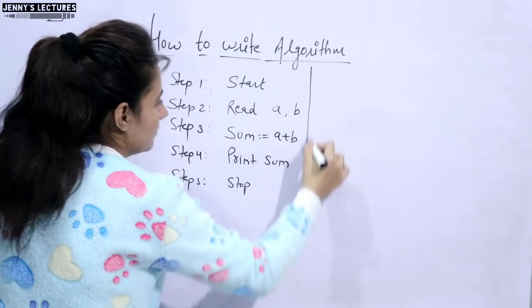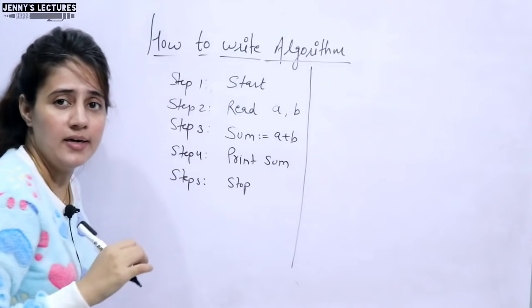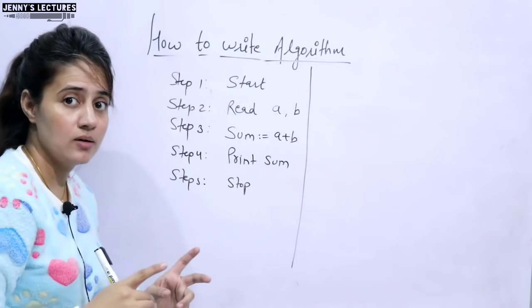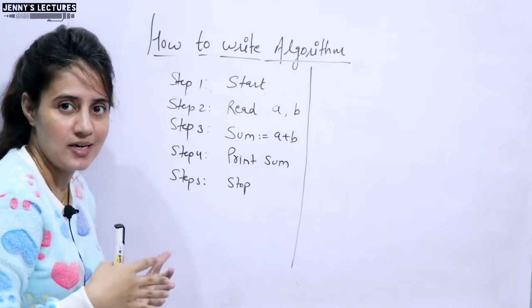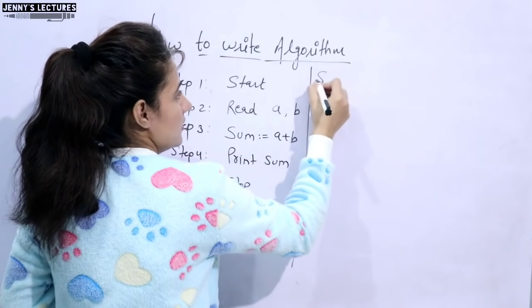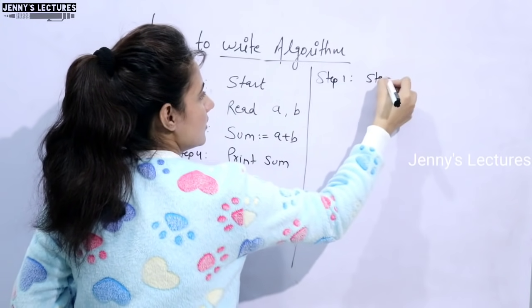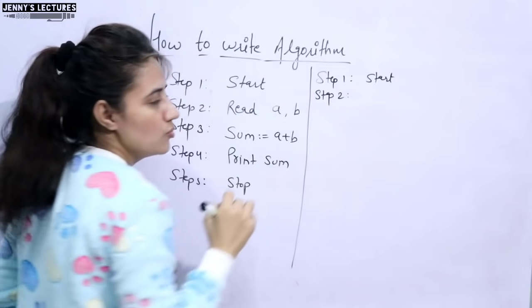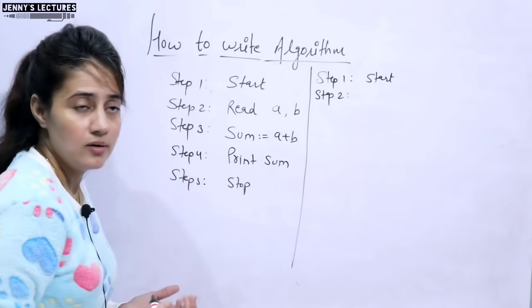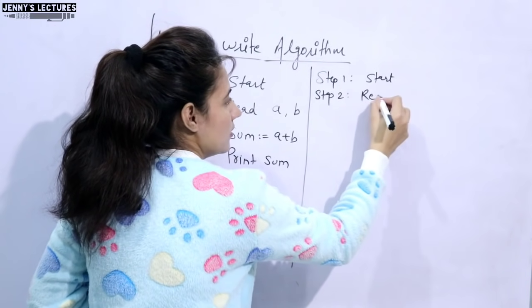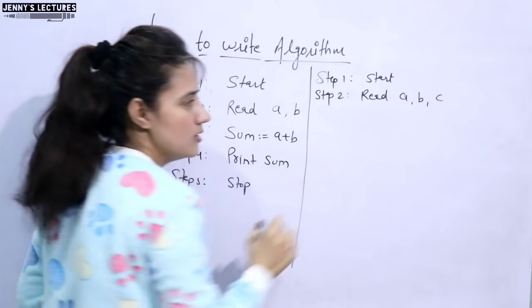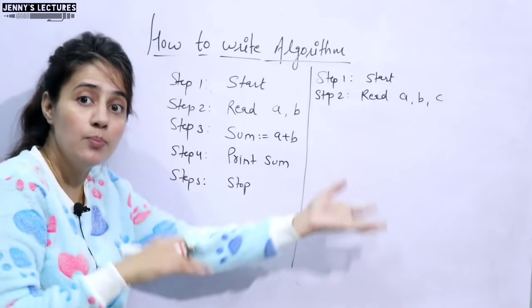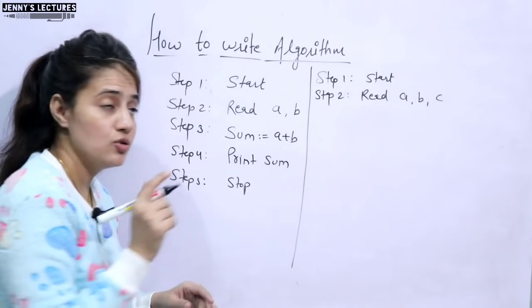Now let me take one more example. Like suppose if you want to write an algorithm for finding out the largest among three numbers, then here obviously you will need if-else statements. So first is same. You will write step one and start. Step two, three numbers you need. So you can write here read a, b, c, or you can write enter a, b, c, or you can write input a, b, c.